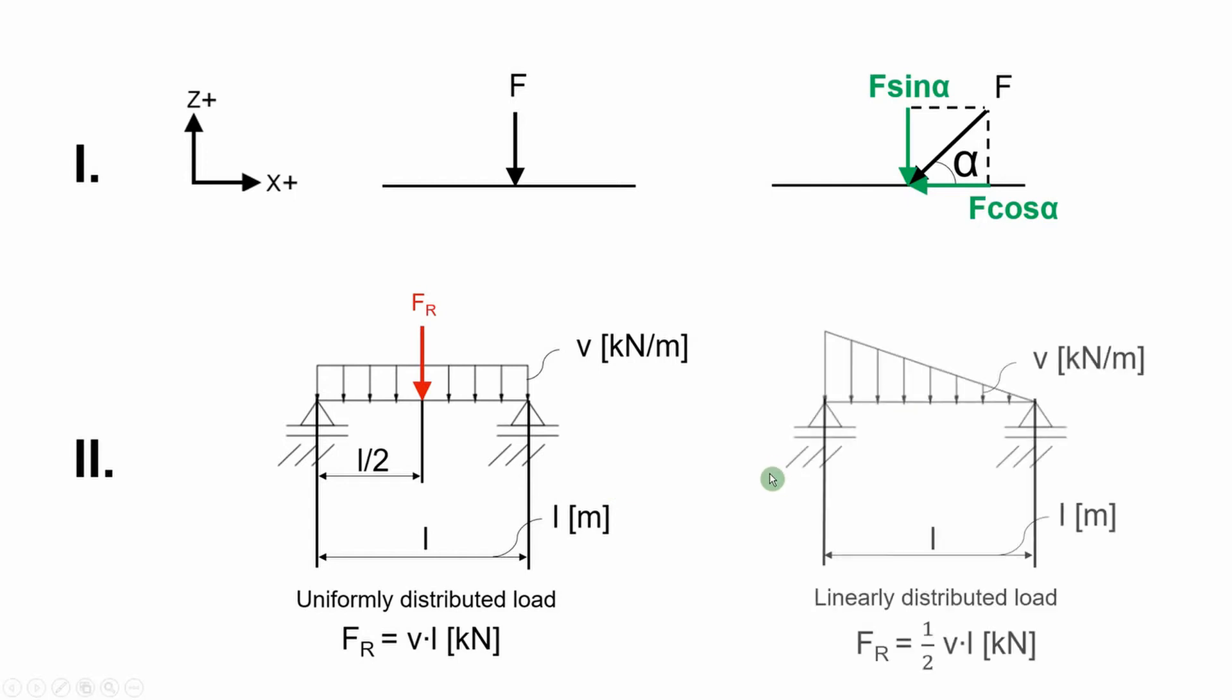And the linearly distributed forces. Here the resultant force is half the product between the load's value and the length on which the load was applied on. The point of application of the resultant force is at one third of the length the load was applied on, or two thirds the same length depending from which side we choose to see.